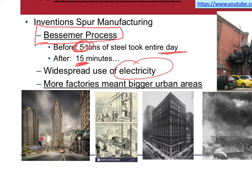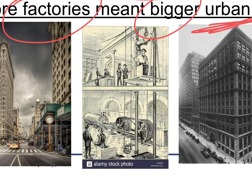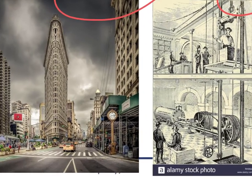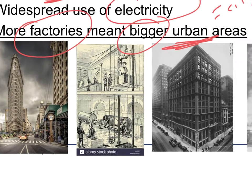More factories — whether steel, oil, or anything else — means bigger urban areas. Urban means city; rural means countryside. Suburbs are areas outside the urban city. Also, inventions are being created that we're thankful for. The passenger elevator is invented for these skyscrapers — imagine how impractical a skyscraper would be without one. Once you have an electric elevator, that changes everything.